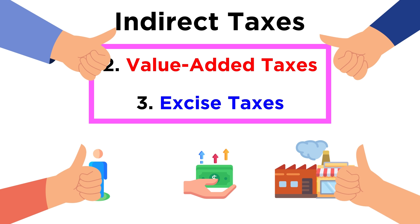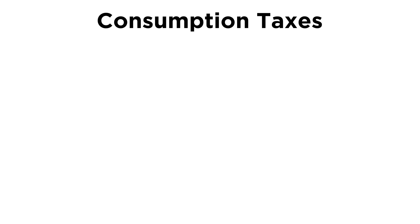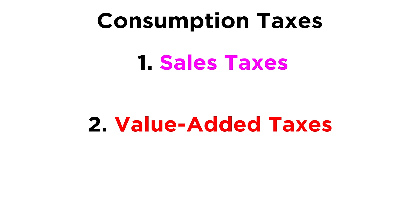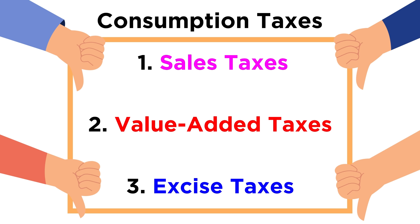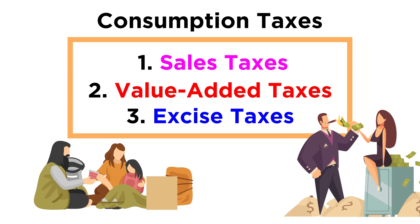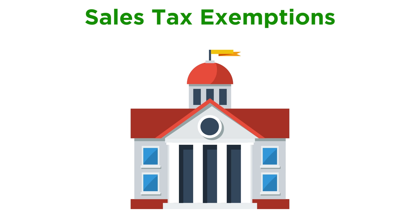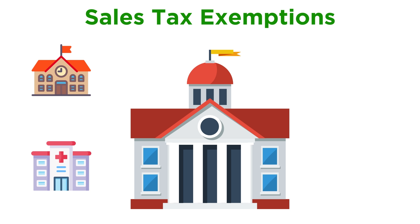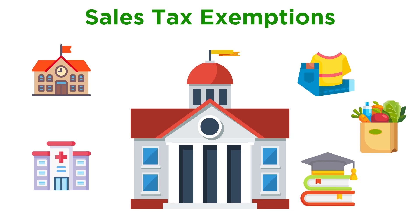Regardless, most people are fine with excise taxes, as long as they are sin taxes, because they think if something is bad for you or society as a whole, then it should be more expensive to discourage people from buying it. To review, the three main types of consumption taxes are sales taxes, value-added taxes, and excise taxes. Critics often say consumption taxes are the most regressive form of taxation, since people who have the least amount of wealth end up paying a larger portion of their wealth in taxes than wealthier individuals do. One way governments have attempted to solve this problem is by allowing sales tax exemptions, meaning certain organizations like schools or non-profit hospitals don't have to pay sales taxes. Additionally, governments may make the sale of certain goods tax exempt, like clothing, groceries, and other items that are important for survival.